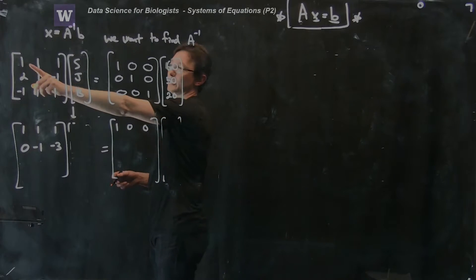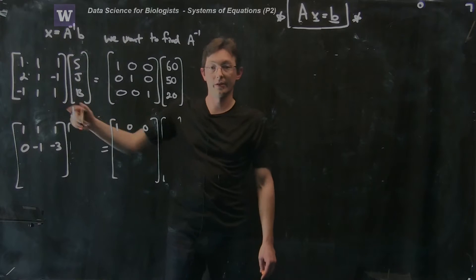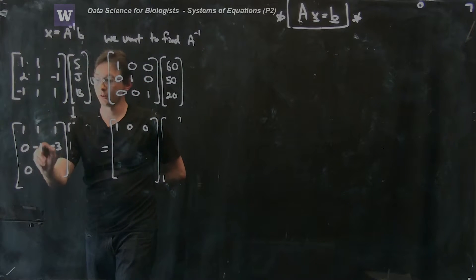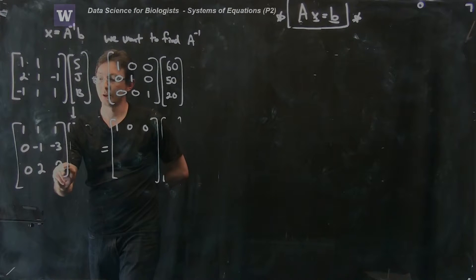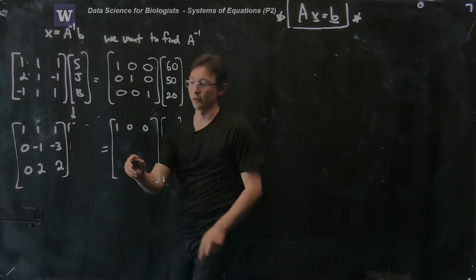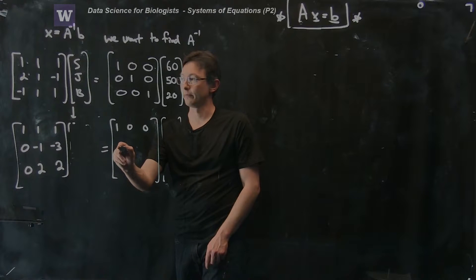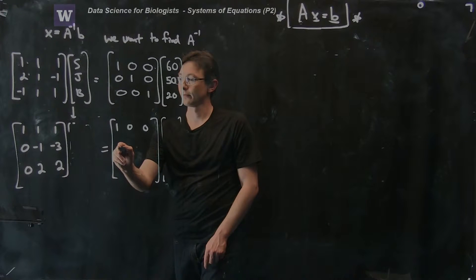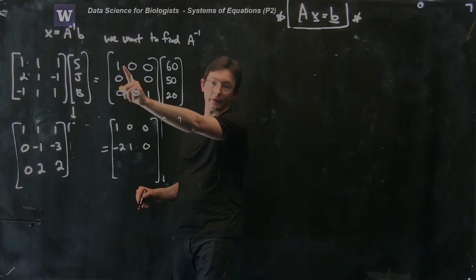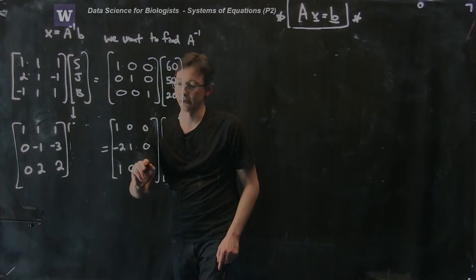So we subtracted two of the first row from the second row and added the first row to the third row. For the identity side, the second row becomes minus 2, 1, 0, and adding the first row to the third row gives 1, 0, 1 on the identity side.